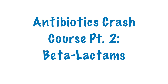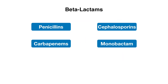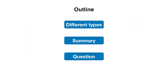Hello everyone and welcome to QuickMed, where medicine is explained quickly and easily. In this video we will be covering part 2 of our antibiotics crash course, where we will complete the full beta-lactam series. In part 1 we discussed penicillins, and in this video we will be going over cephalosporins, carbapenems, and monobactam. We'll start with an in-detail discussion of the different generations of cephalosporins, and then end with a summary and a practice question to solidify your understanding.